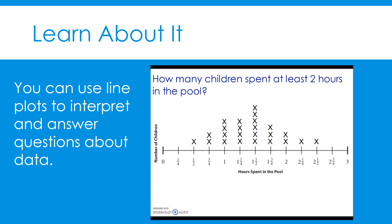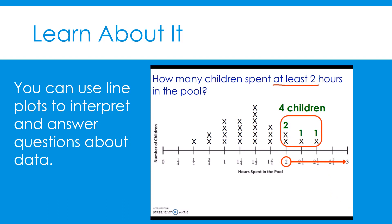Here's our next question: how many children spent at least two hours in the pool? The question asks for at least two hours, meaning two hours and values greater than two are all included in this answer. These are the values that represent at least two hours spent in the pool. We have two children who spent two hours, one child who spent two and one-fourth hours, and one child who spent two and one-half hours. If we add up those children, we get four. Four children spent at least two hours in the pool.